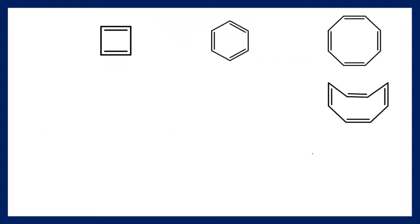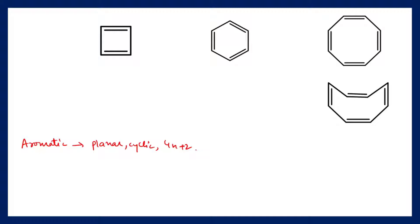Now let us see whether these compounds are aromatic, anti-aromatic, or non-aromatic in nature. Let us first recapitulate the conditions for a compound to be aromatic, anti-aromatic, or non-aromatic. For aromatic compounds, the compound should be planar, cyclic, should follow the 4n+2 pi electrons rule (Hückel's rule), and all carbon atoms should be sp2 hybridized.